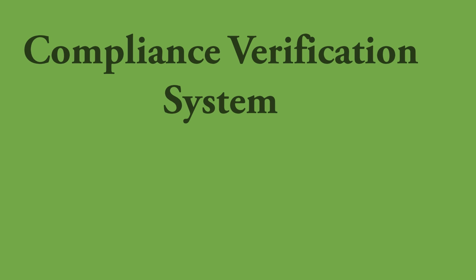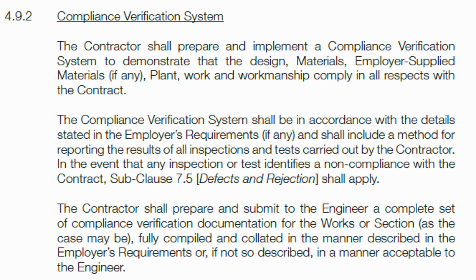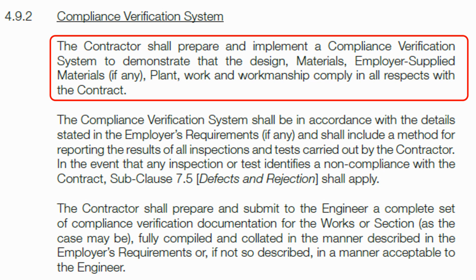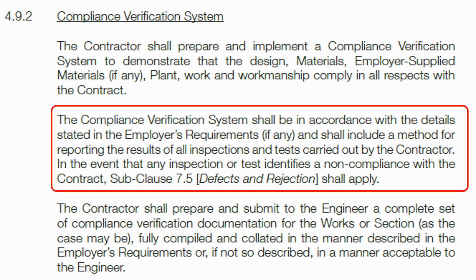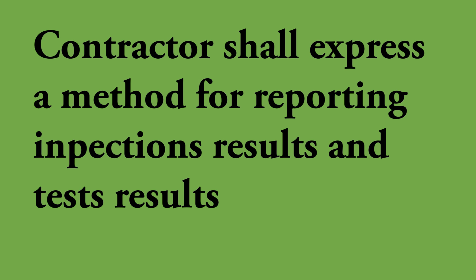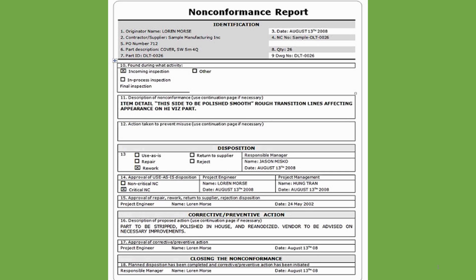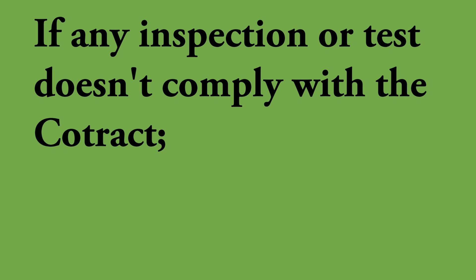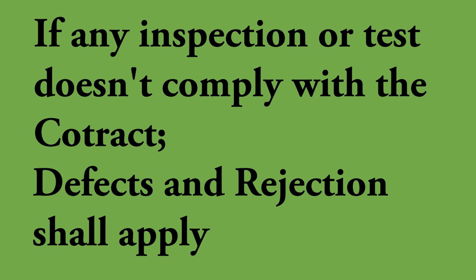Next, I'll talk about the compliance verification system. Under definitions you cannot get a clear idea about it, so I'll take you to sub-clause 4.9.2. Basically, this system is implemented to ensure that the contractor is maintaining the required quality during construction, and that all functional requirements are fulfilled. The clause says the contractor shall prepare and implement a compliance verification system to demonstrate that the design, materials, employer-supplied materials, plant, work, and workmanship comply in all respects with the contract. This system should be prepared referring to employer's requirements, specifications, and regulations. The contractor shall mention in this system how he's going to report the results of all inspections and tests carried out. You must have heard the term NCR — non-compliance report — which is issued when the contractor fails to comply with the expected quality. In the event that any inspection or test identifies a non-compliance with the contract, sub-clause 7.5, defects and rejection, shall apply.